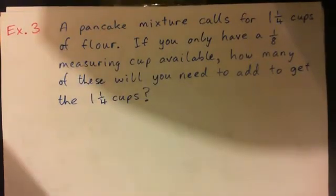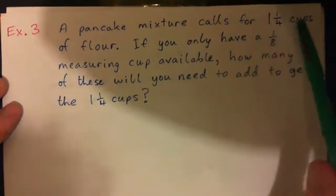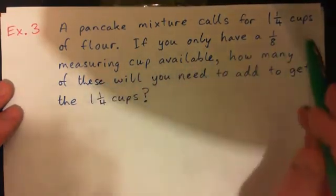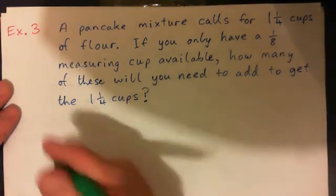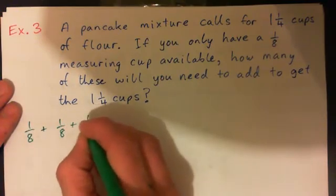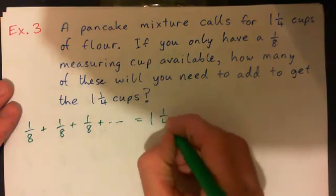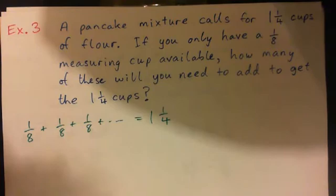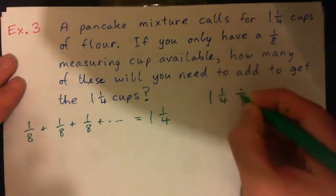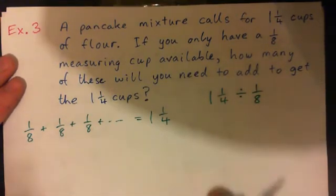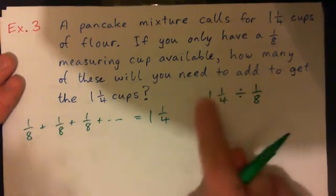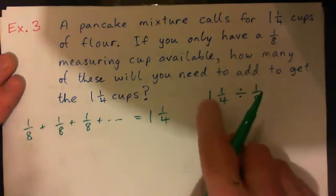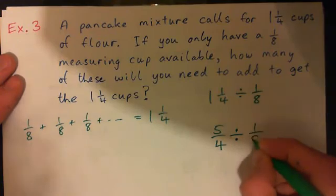Example 3: a pancake mixture calls for 1 and 1 quarter cups of flour. If you only have an eighth measuring cup available, how many of these little eighths will you need to add to get the 1 and 1 quarter cups? In other words, how many eighths are contained in 1 and 1 quarter? You'd write this as 1 and 1 quarter divided by 1 eighth. I'll turn that mixed number into a regular fraction: 4 times 1 is 4, plus 1 is 5, so that's 5 quarters. So I have 5 quarters divided by 1 eighth.